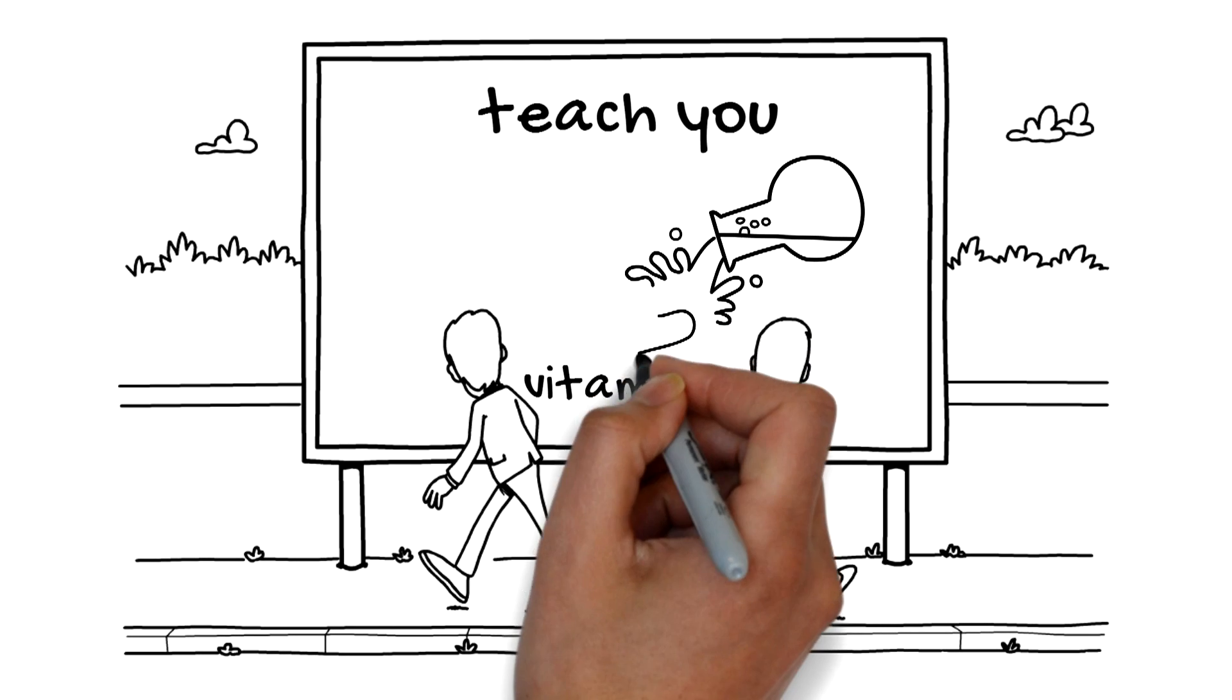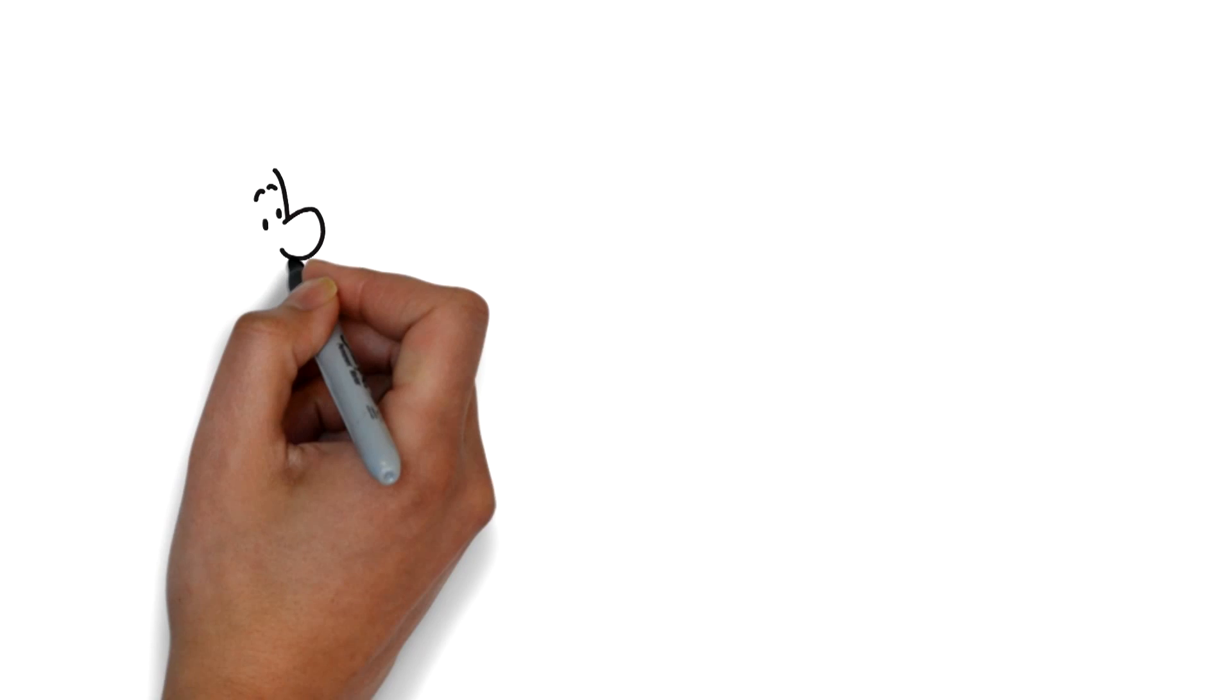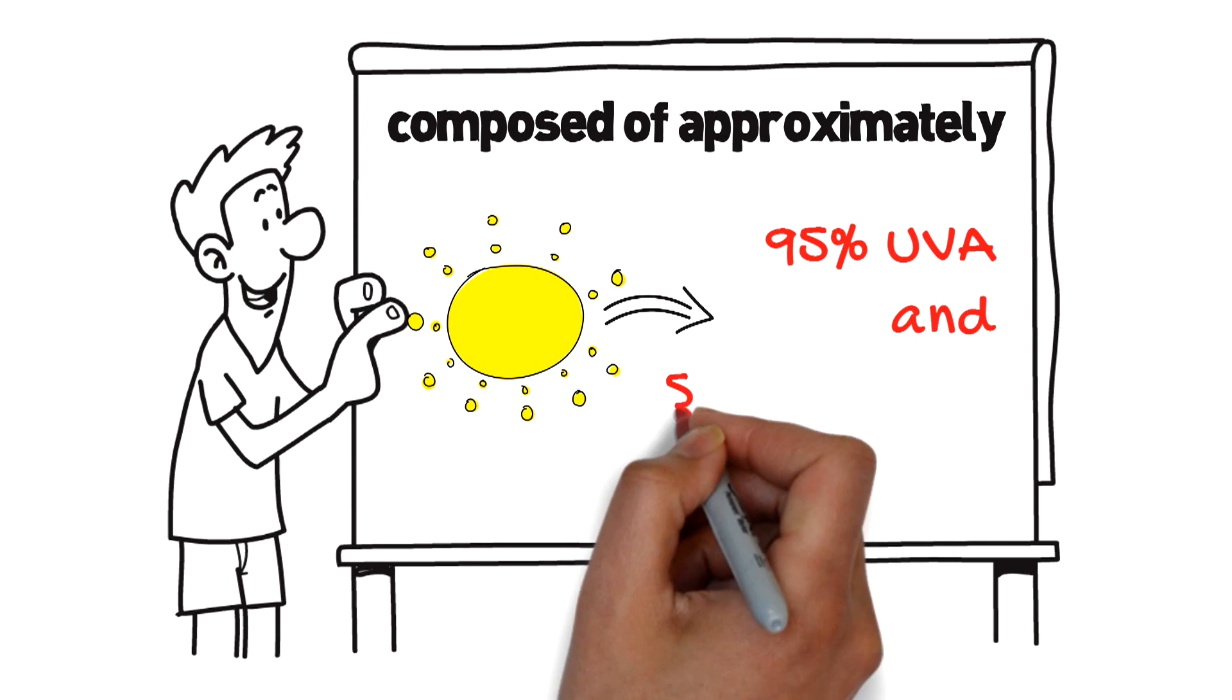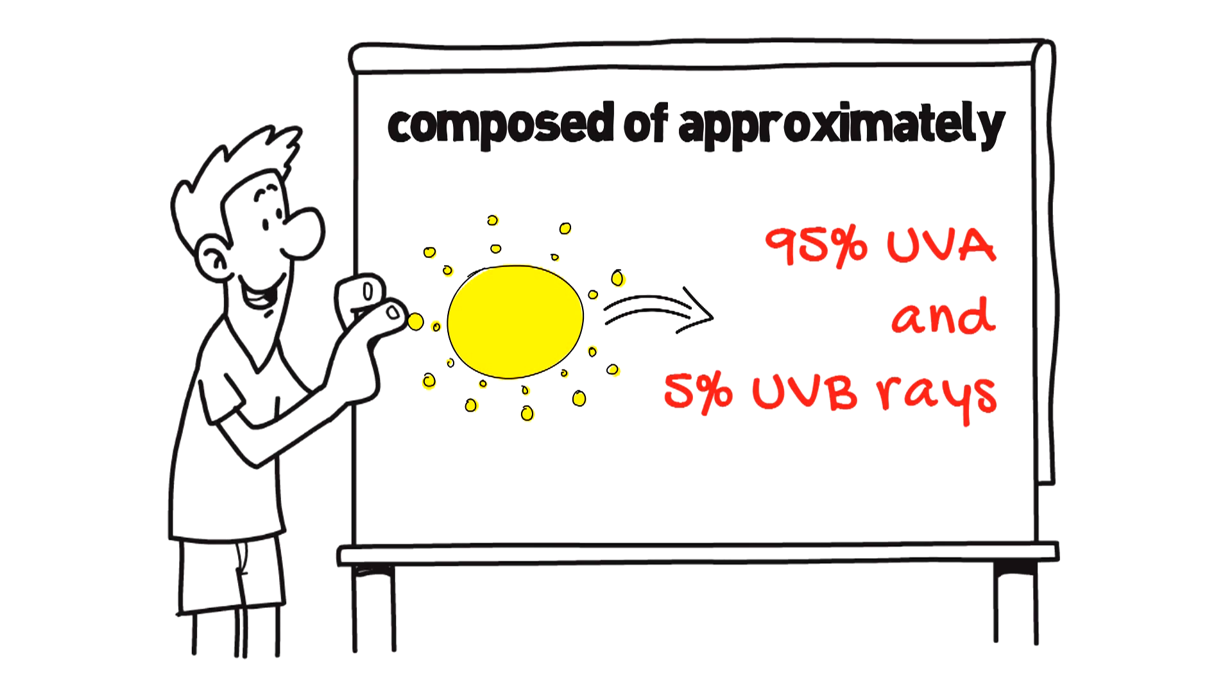Today we want to teach you when you can make vitamin D from sunshine. Sunshine or UV at midday in summer is composed of approximately 95% UVA and 5% UVB rays.